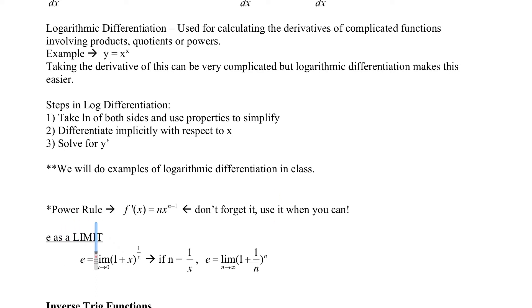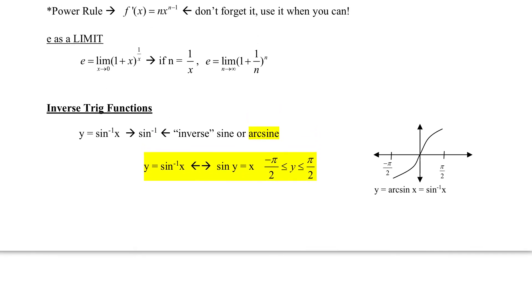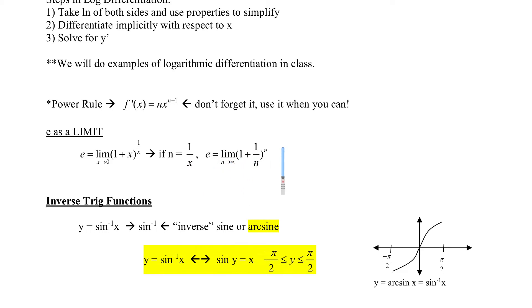Don't forget the power rule: n times x^(n-1) — this is the basic one we use when we can. We've also talked about e as a limit: e equals the limit as x goes to zero of (1 + x)^(1/x). If n equals 1 over x, then e equals the limit as n goes to infinity of (1 + 1/n)^n. This is kind of like that compound interest equation we've talked about.